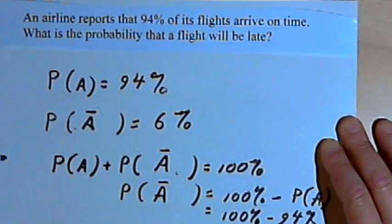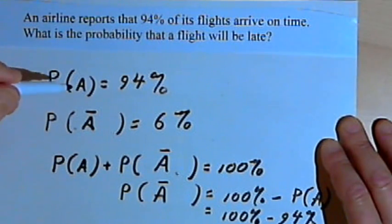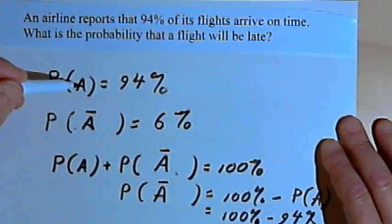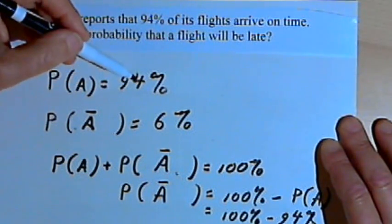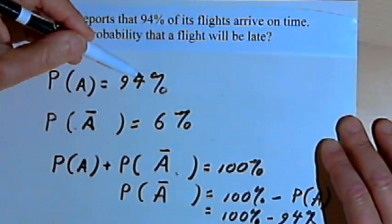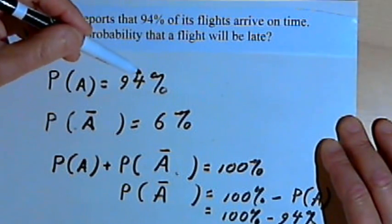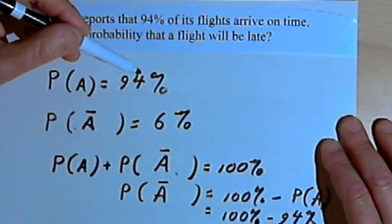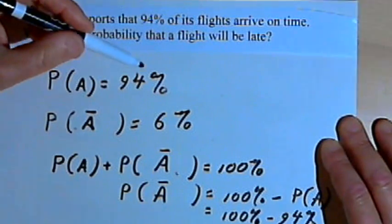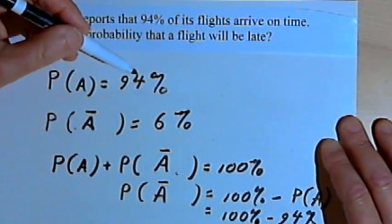The general way you're going to find the complement of an event — the probability of it not occurring — is to subtract the probability of the event occurring from 100% if you're dealing with a percent, or from 1 if it's not a percent.